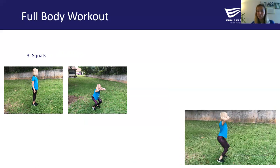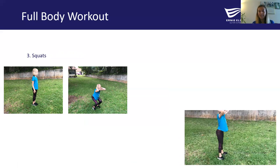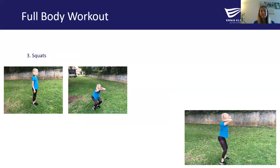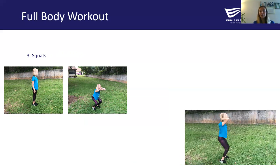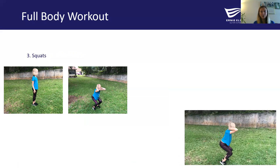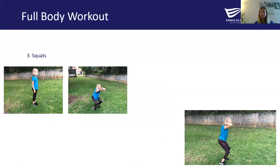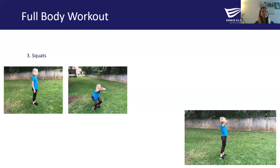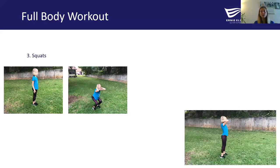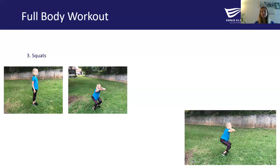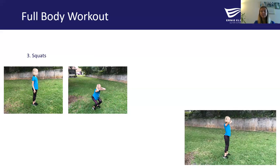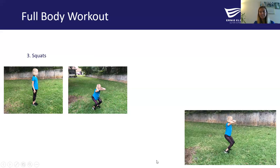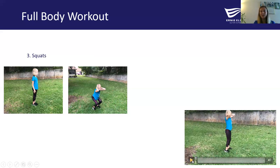Exercise three is our squats — moving into our lower body exercises. We're pretending like we're sitting in a chair. Our knees shouldn't be going past the toes; our weight should be in the heels of the foot. Our chest should stay up and our neck should be nice and neutral, making sure our chin is off the chest. Pause the video for 30 seconds while you do your squat, and restart for exercise four.